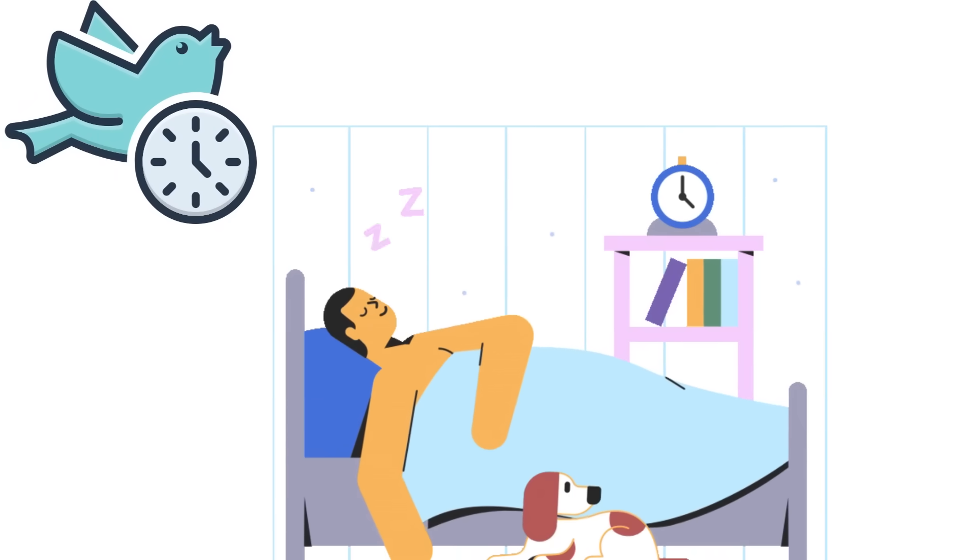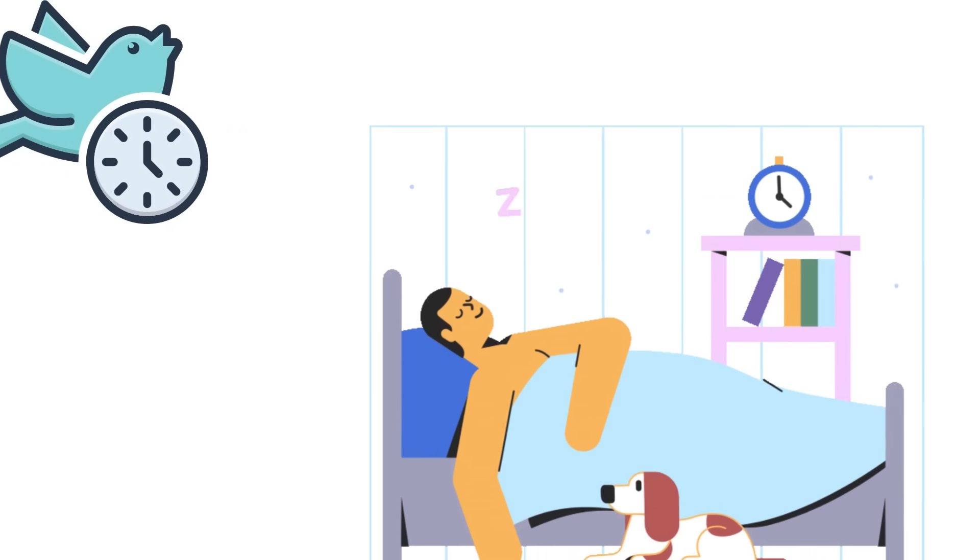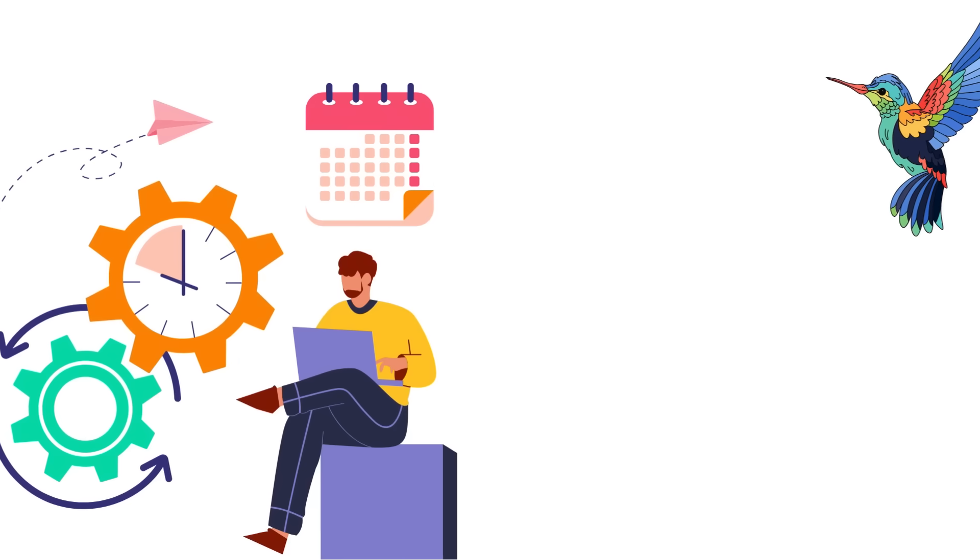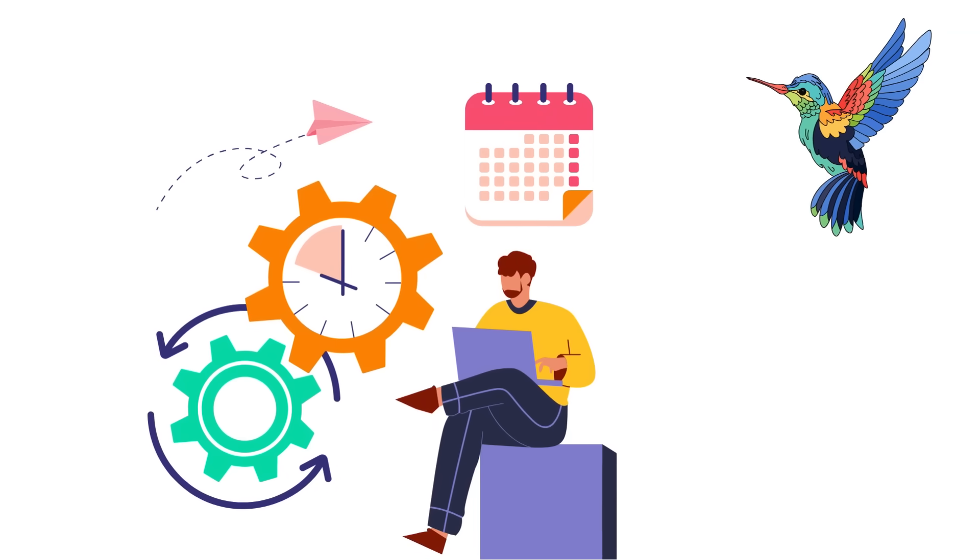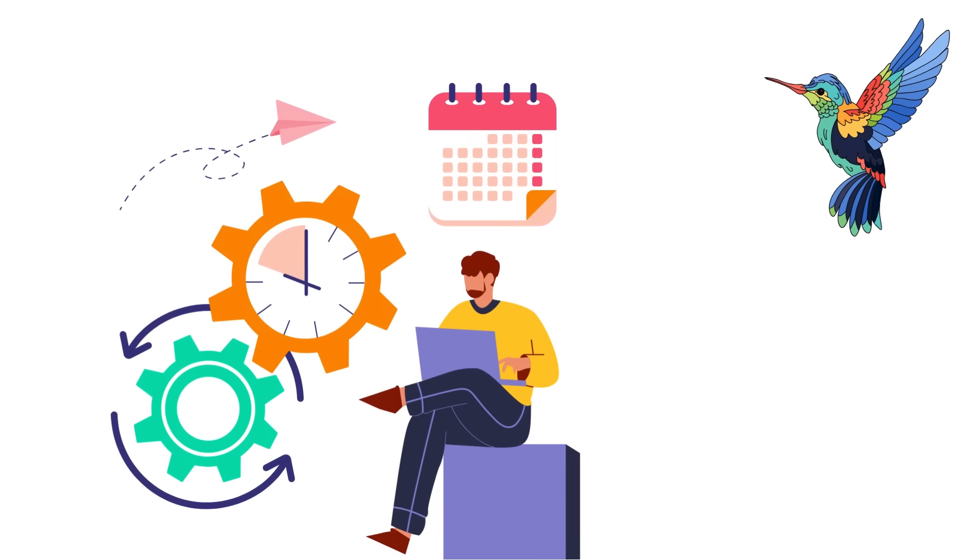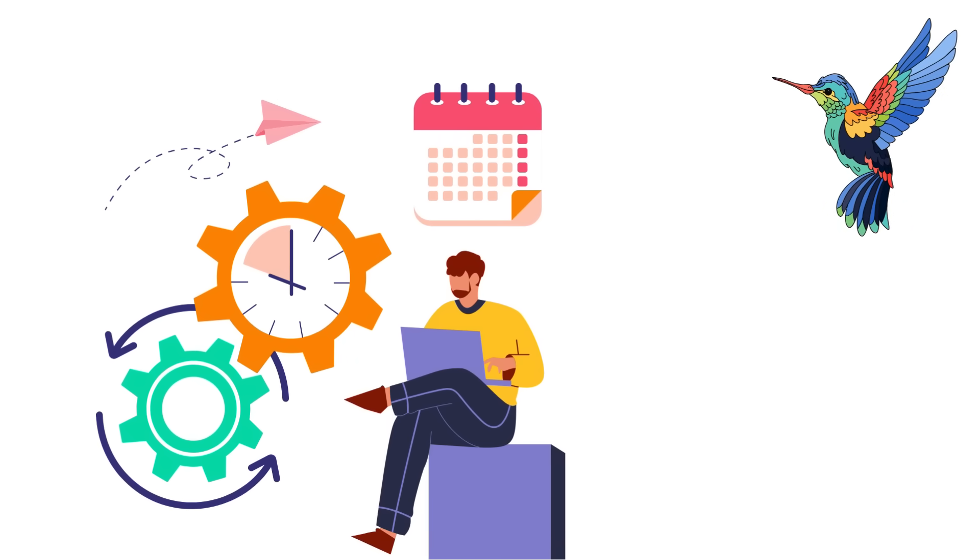On the flip side, we have our early birds or larks, those chipper individuals who bounce out of bed at the crack of dawn, ready to seize the day while the rest of us are still drooling on our pillows. And somewhere in the middle, we have the hummingbirds, the lucky ones with more flexible sleep patterns who can adapt to either schedule without too much fuss.